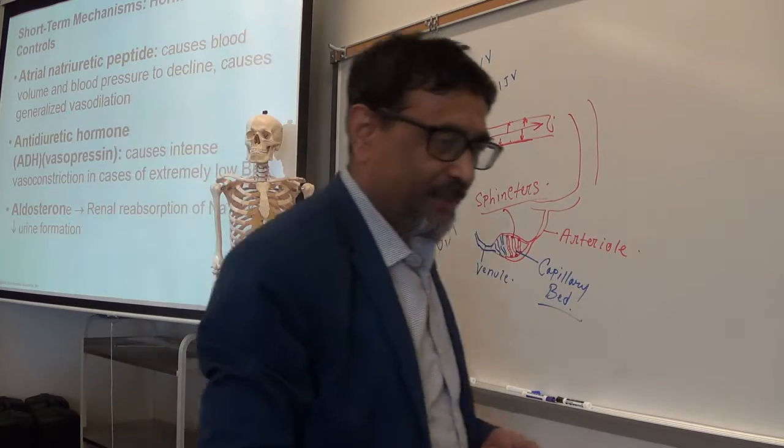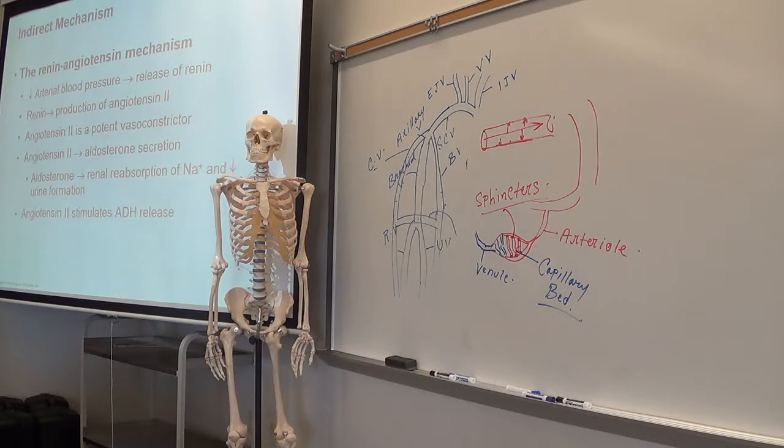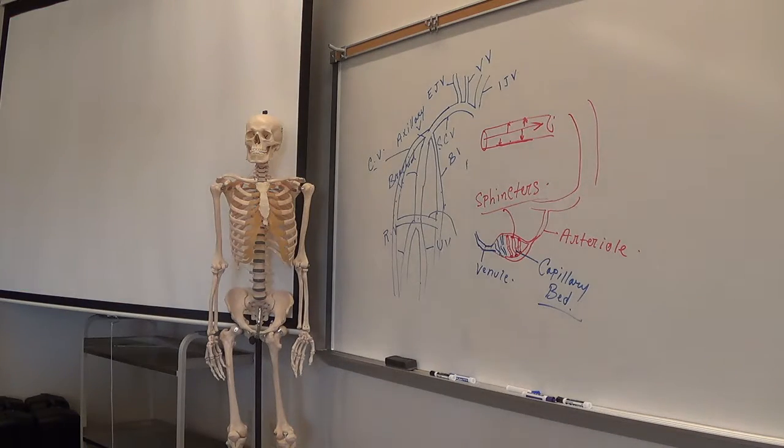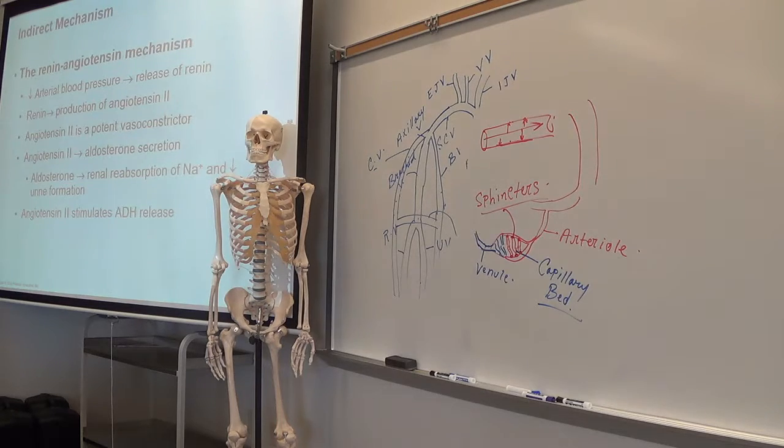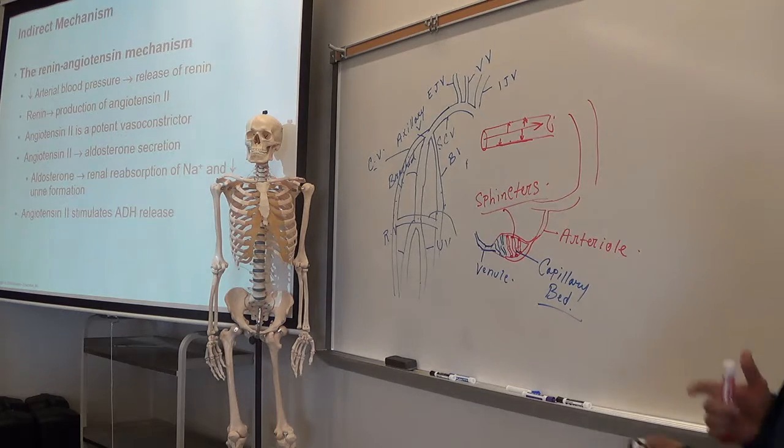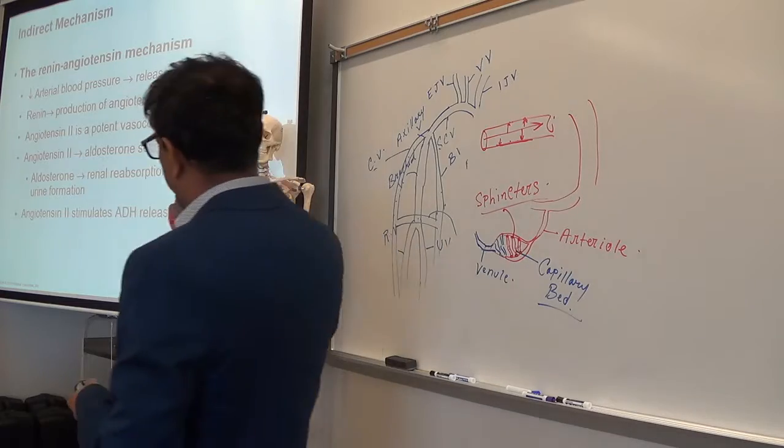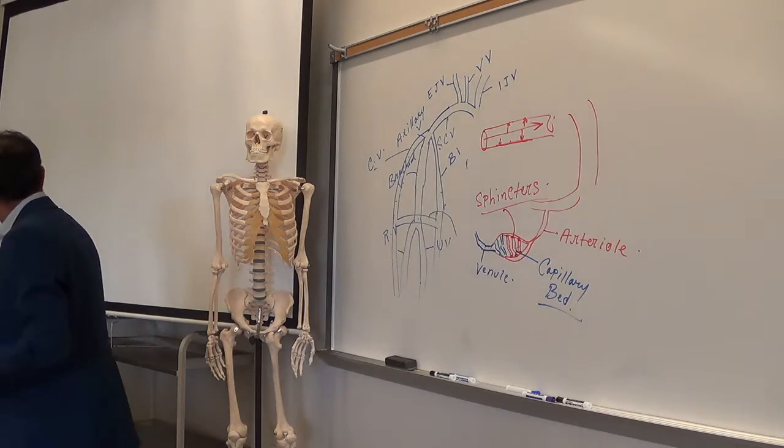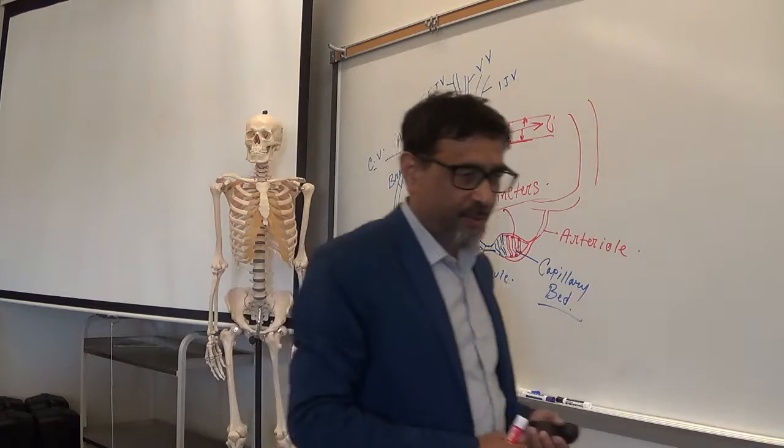So that's the function of aldosterone. This is how angiotensin 1 and 2 are formed. So that's how the blood pressure is controlled.